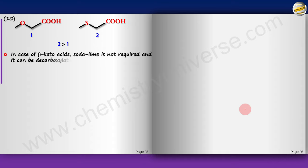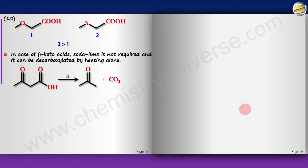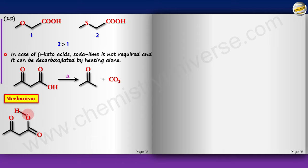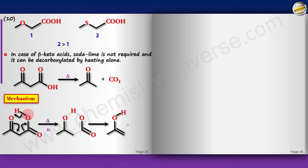Special case: beta-keto acids do not require soda lime and can be decarboxylated simply by heating alone. The mechanism is concerted via a six-membered transition state: the O–H bond breaks and reforms with the beta-carbonyl oxygen; the pi bond of the carbonyl shifts; CO₂ is released and an enol is formed, which tautomerizes to give the ketone product.